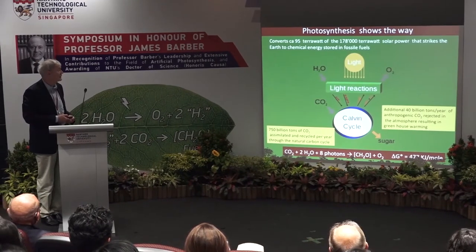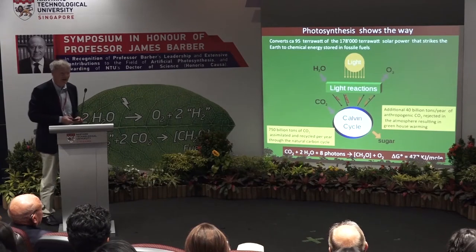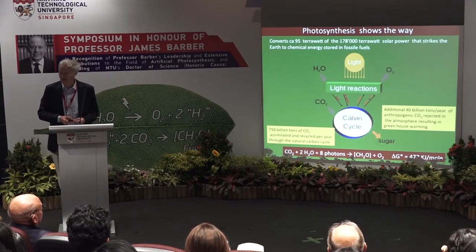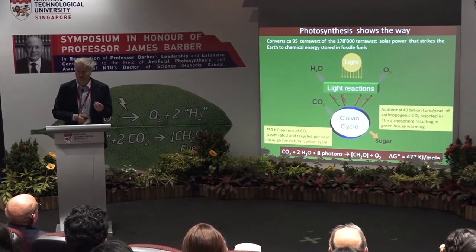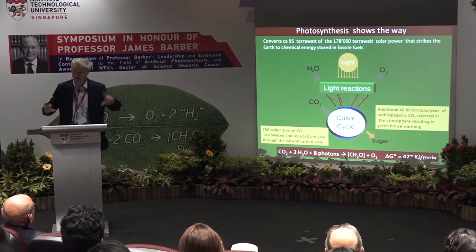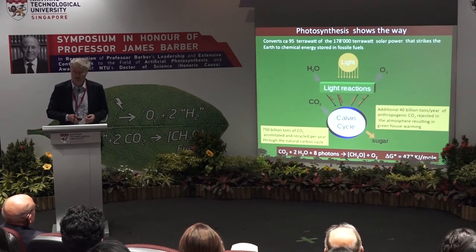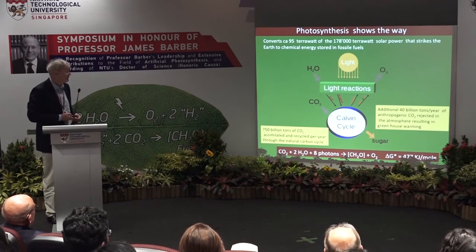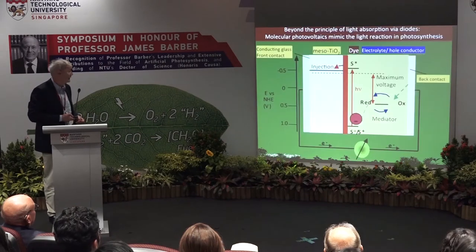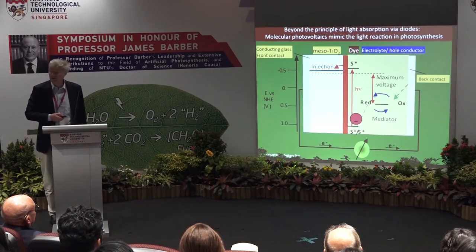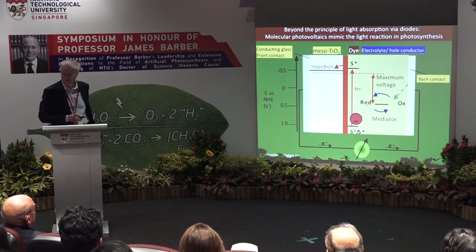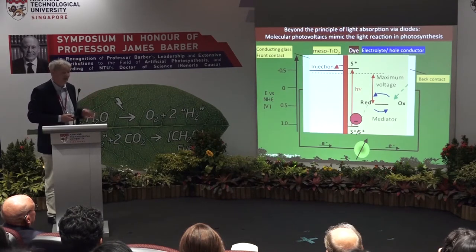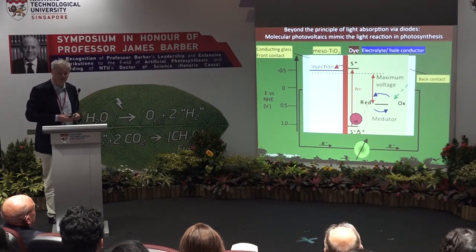Photosynthesis shows the way. We have heard Jim just mention the 100 terawatts that is stored in fuels — about five times today's total energy consumption. And so, we can learn from the plant. One thing the plant does: it doesn't use a diode, it doesn't have a PN junction. The dye-sensitized cell was the first to mimic the initial light reaction and charge generation from a molecular absorber.